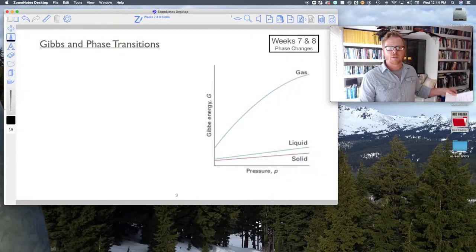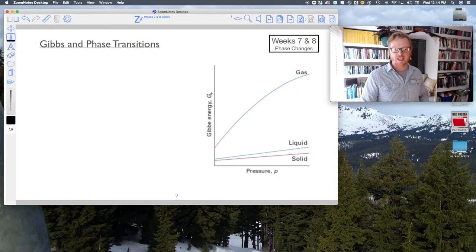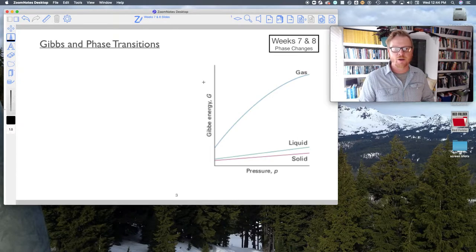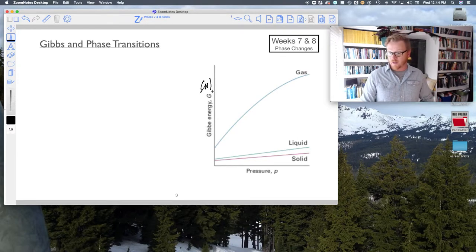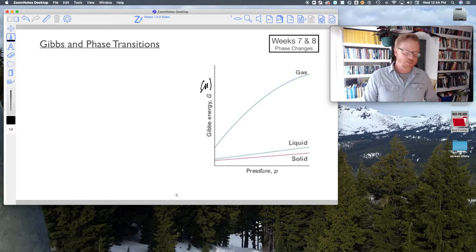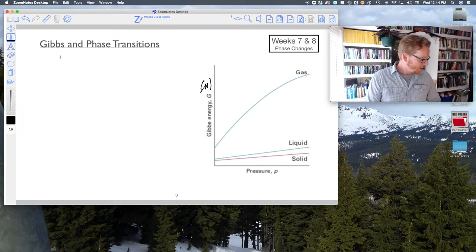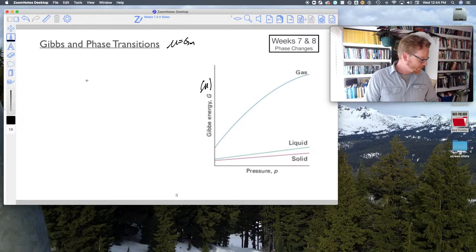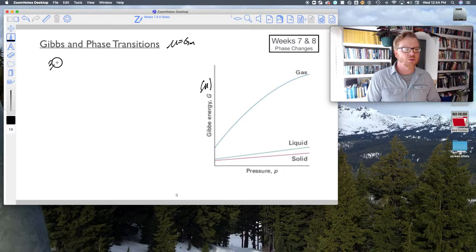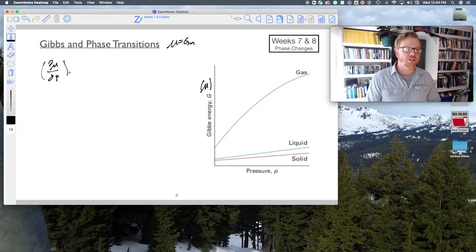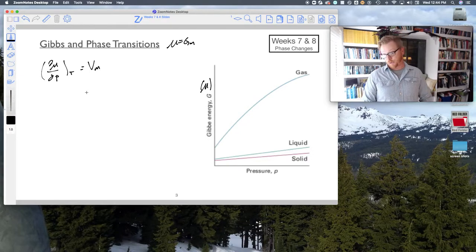So now what about the other relationships? This says Gibbs free energy, but we recognize that we could call that chemical potential versus pressure. We remember mu equals molar Gibbs free energy, and also the partial of that chemical potential with respect to changes in pressure at constant temperature equals molar volume.